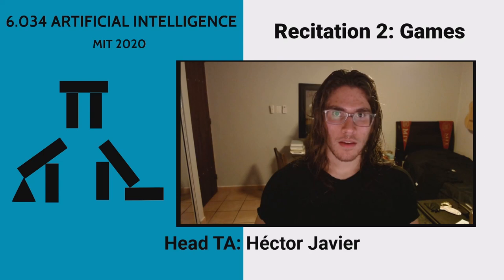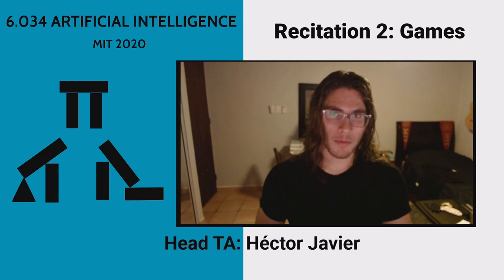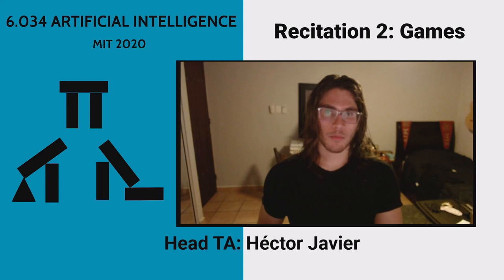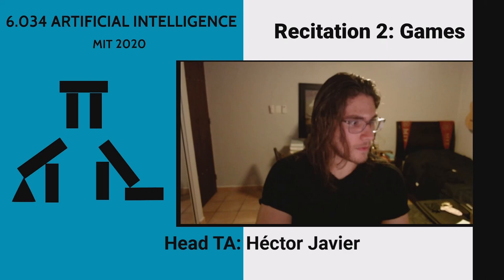In order to cover Minimax, we'll be building up some vocabulary, roughly summarized under 'static values.' We'll also be covering optimizations built on top of Minimax — particularly alpha-beta pruning in depth, and then briefly discussing two more optimizations: progressive deepening and the reordering trick.